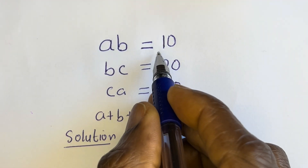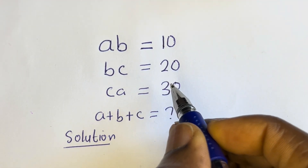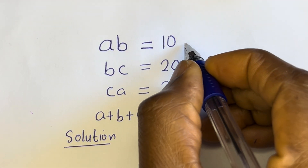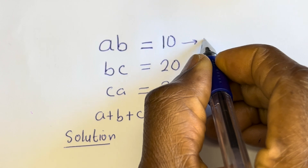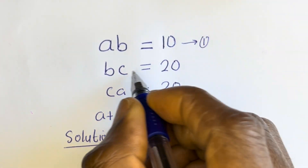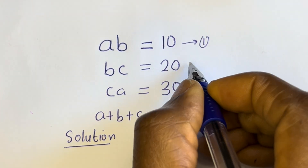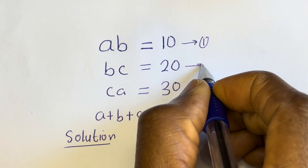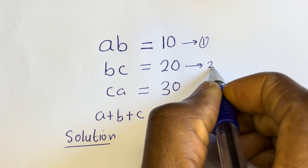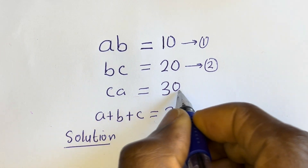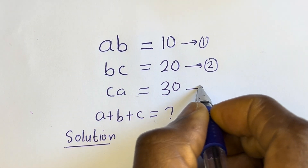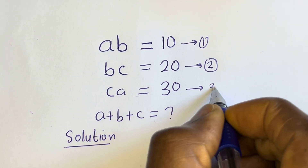Then ab is equal to 10 — let's call this equation 1. bc is equal to 20 — let's call this equation 2. ca is equal to 30 — let's call this equation 3.